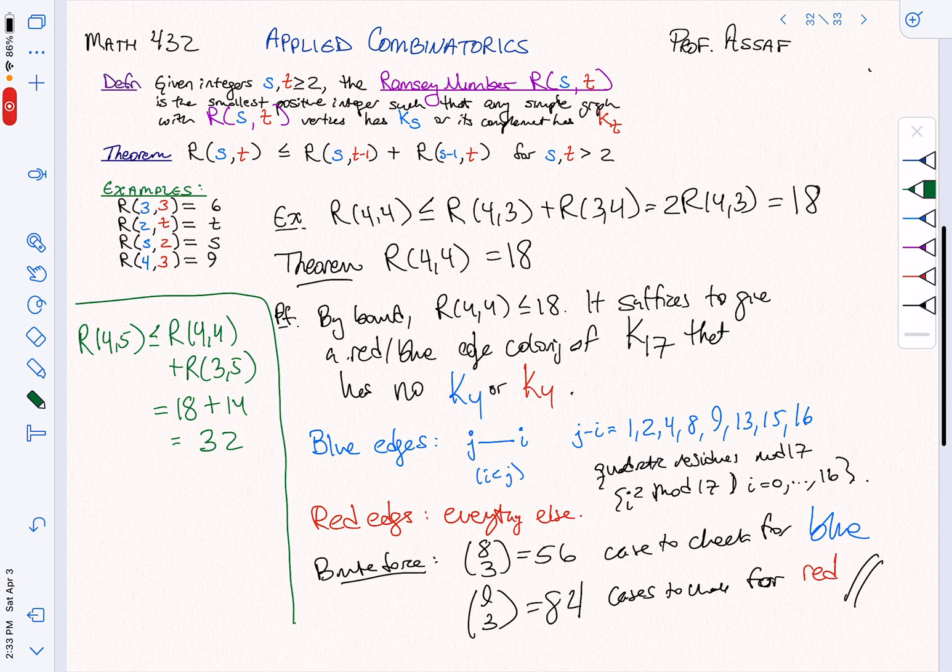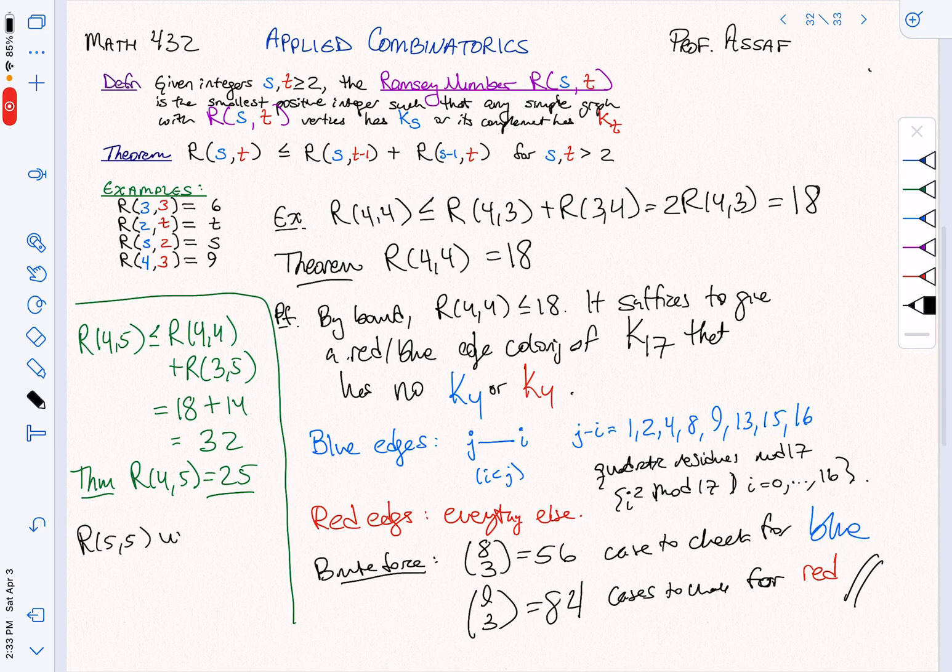But in fact, you can actually show, and it's an incredible amount of work, it's a major theorem, that R of 4, 5 is actually just 25. So it's way below the bound. And it's still an open problem. So R of 5, 5 is unknown. We can compute bounds for it. And the best known bounds that we have, computed through some of the methods that we'll go through in the next video series, is that it's somewhere between 43 and 48. We don't know exactly where.